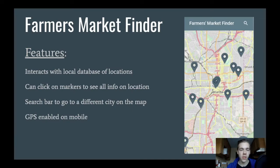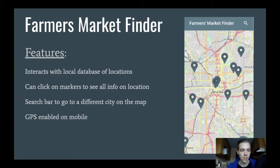So some of the main features that I want to have in this app will be to interact with the local database, click on one of the marker icons, and then the pop-up shows all the information about it. And then that search bar on the top right, and also the GPS needs to be enabled on mobile.